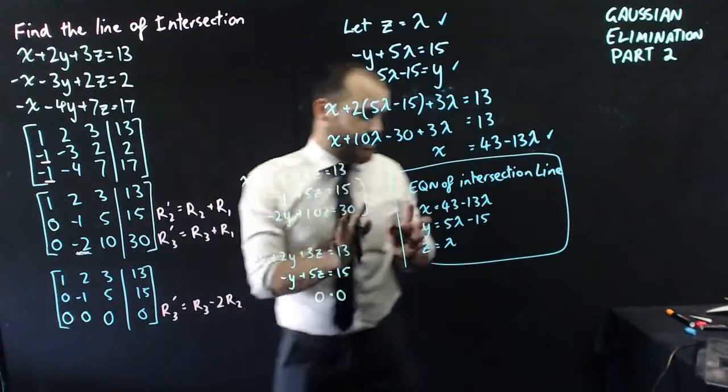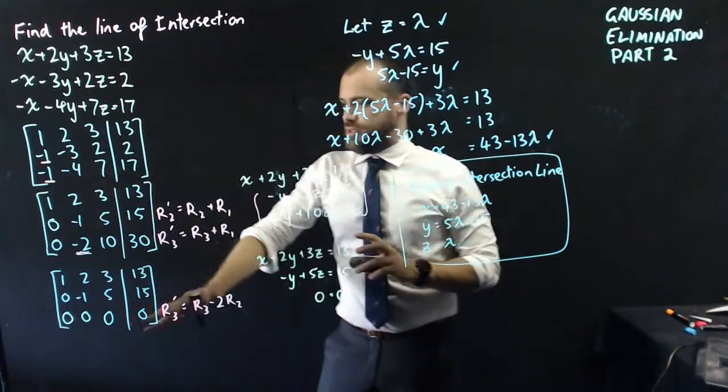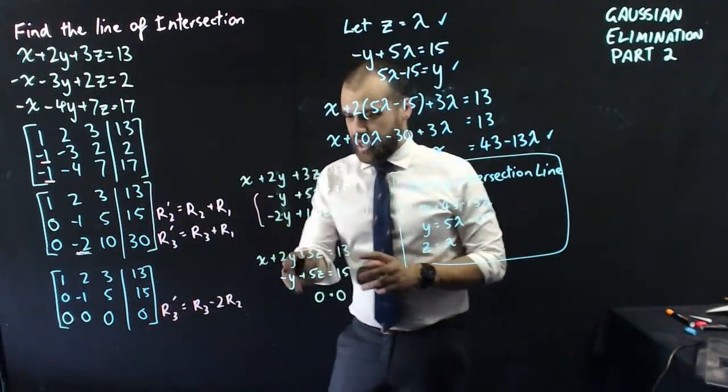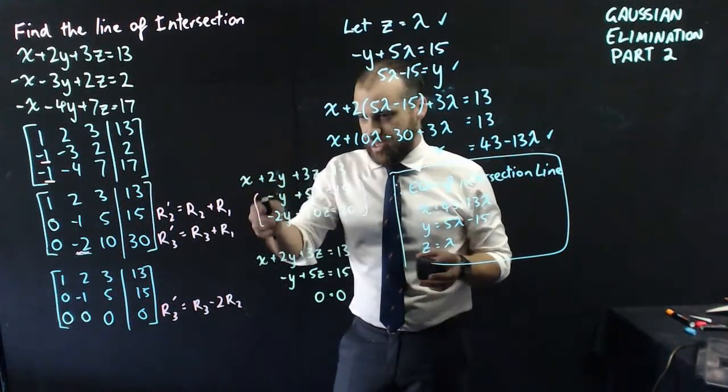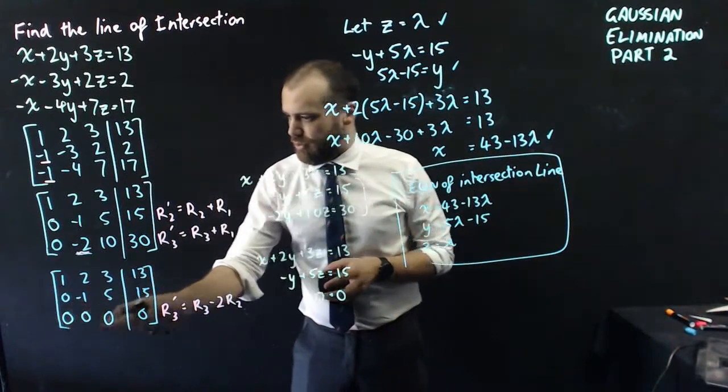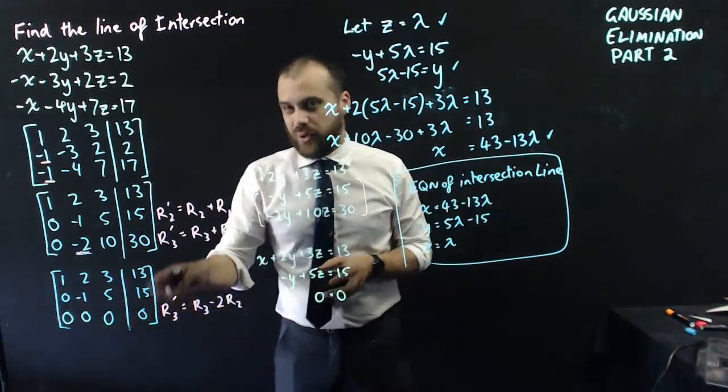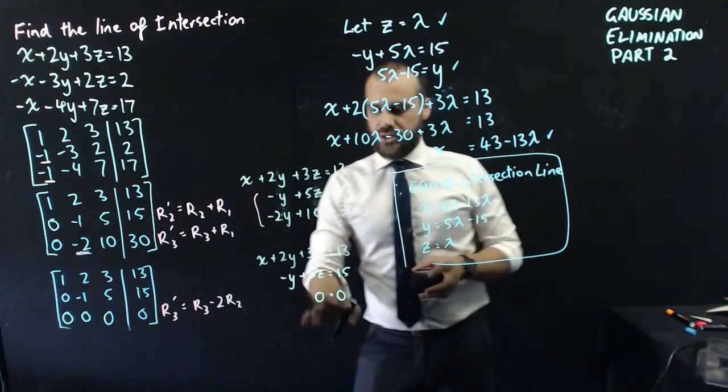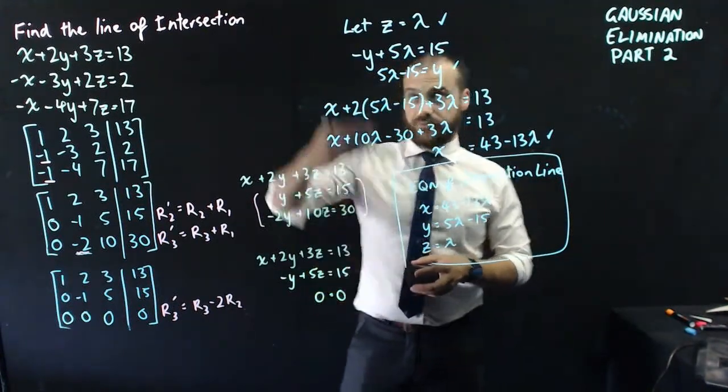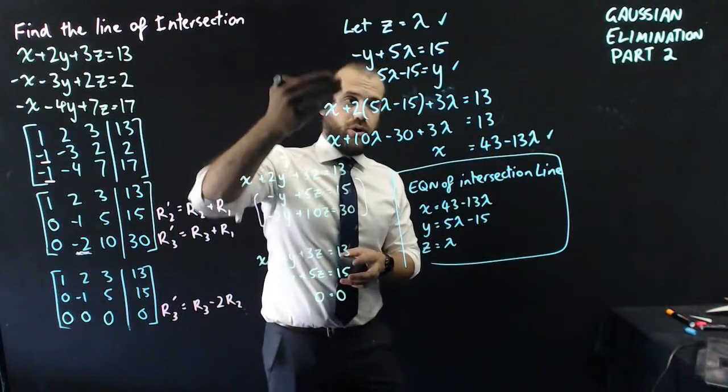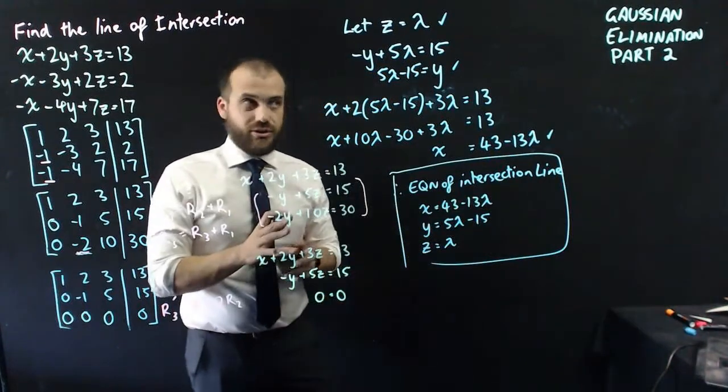The really important bit is to understand that when you're working through Gaussian elimination, you might end up at a stage where two of your equations look the same, or are the same, in which case you're going to end up with a bottom row full of zeros. When you do that, that means that you can let z equal lambda and then work through y and x to get this equation of the intersection line.